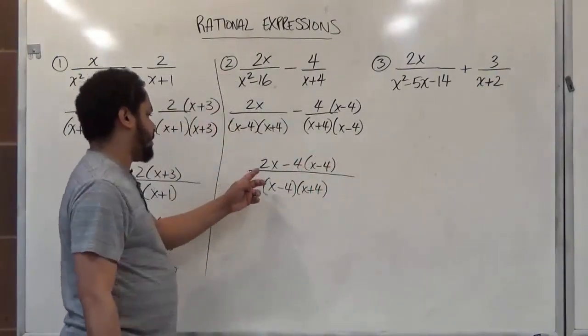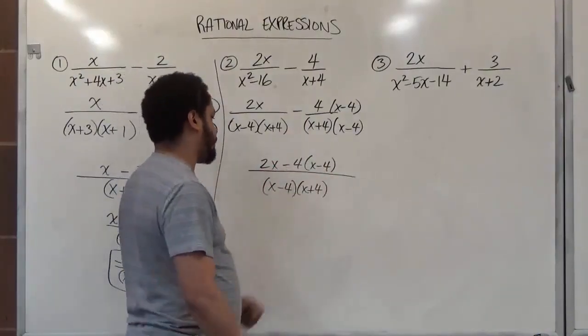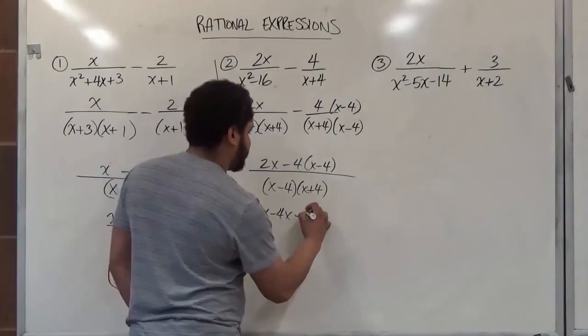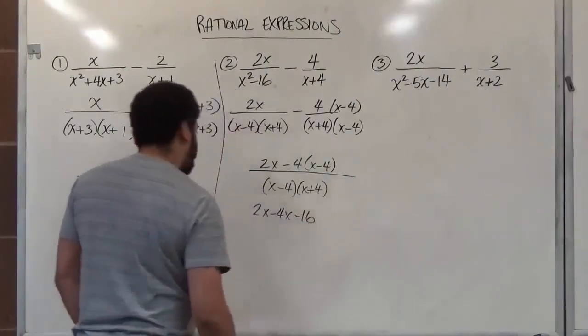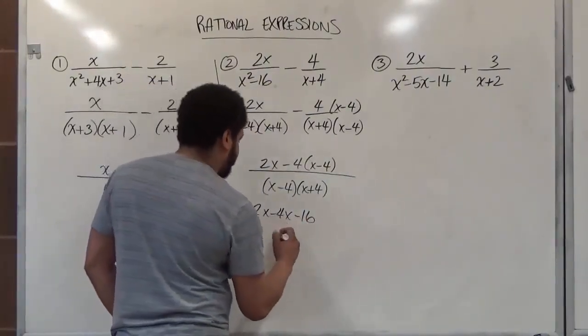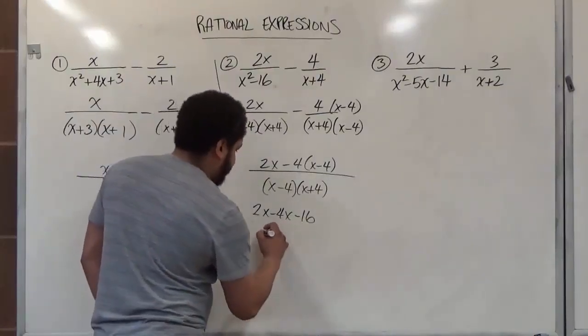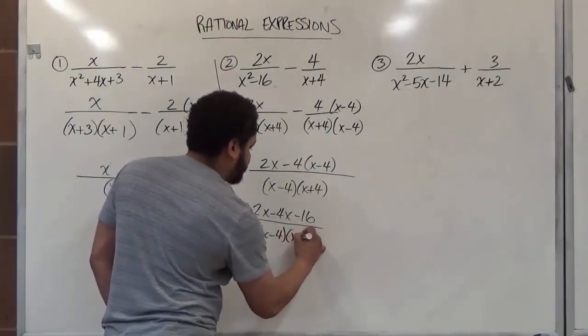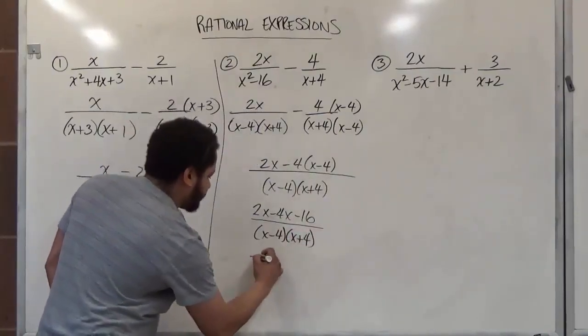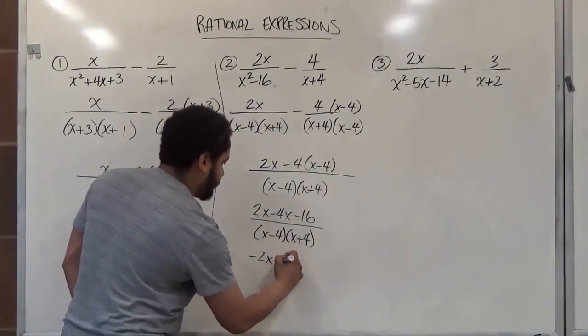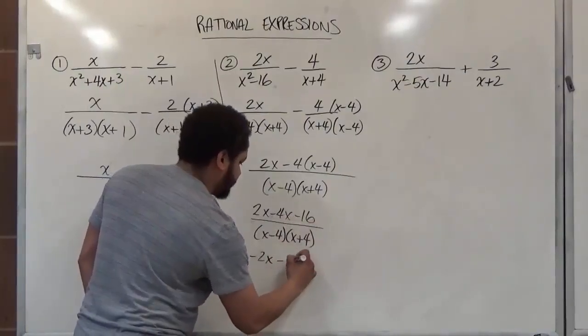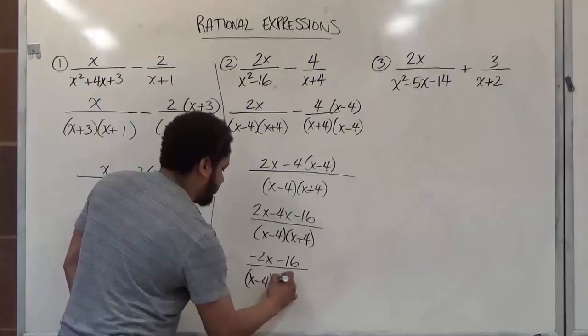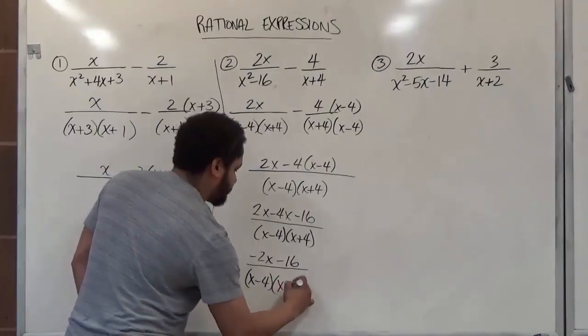Now let's simplify by distributing this. So we have two x's minus four x's minus sixteen. And here we're going to get negative two x's. So we have negative, let's start with the denominator here first, x plus four. So again we're going to have negative two x's, and this is just minus sixteen. The denominator is x minus four, x plus four.